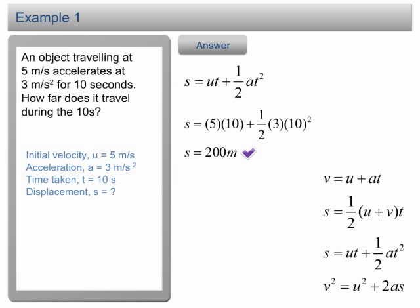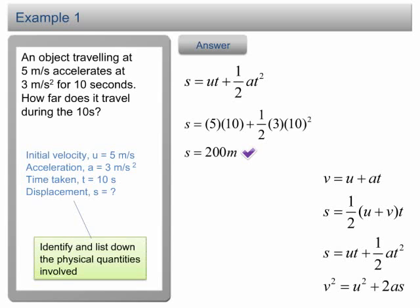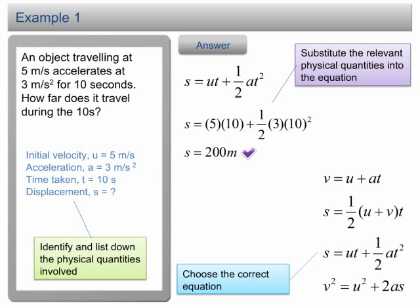Solving a numerical problem in physics is pretty simple. You just need to identify and list down the physical quantities involved, choose the correct equation, and then plug in the relevant physical quantities into the equation and solve the equation.